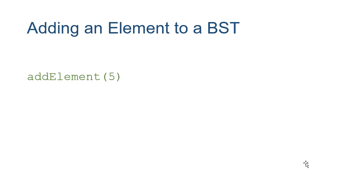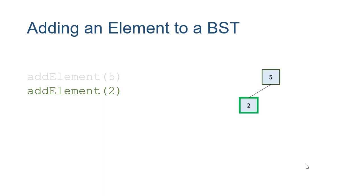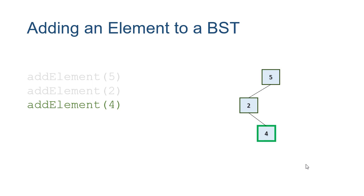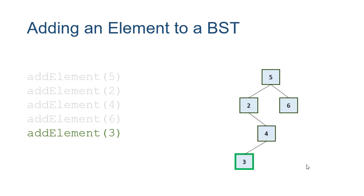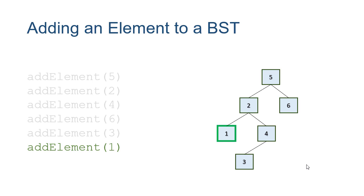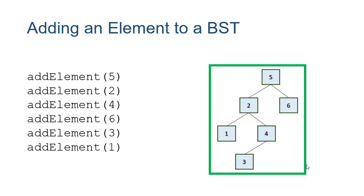We can also build our tree from scratch this way. If we add 5, the tree is empty, so we have a new root. Then if we add 2, it's less than 5, so we add it to the left subtree — which is empty, so 2 becomes the left child of 5. To add 4: it's less than 5 and greater than 2, so it goes in the right subtree of 2 — there's no right subtree, so 4 becomes the root there. When we add 6, it's greater than 5 and there's no right subtree, so 6 becomes the root of the right subtree of 5. When we add 3: less than 5, greater than 2, less than 4 — so we add to the left of 4, which is empty, so it becomes the root of that new subtree. Finally, to add 1: it's less than 5 and less than 2 — there's no subtree there, so we add it. Now our tree is complete.